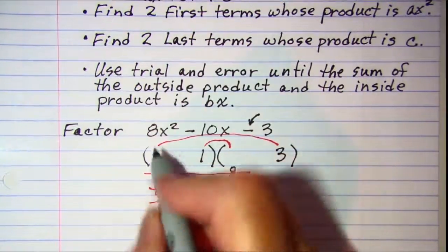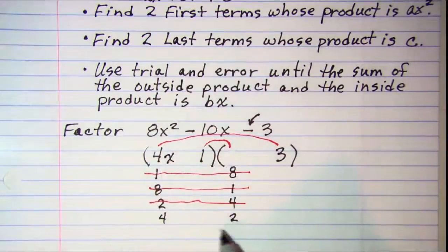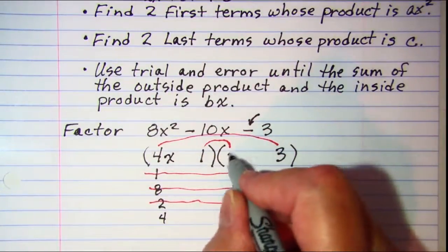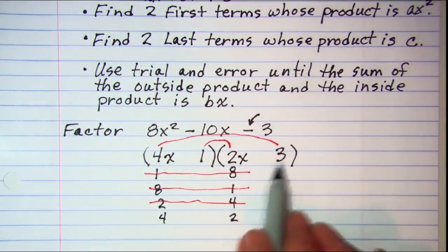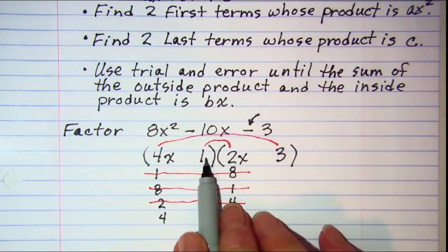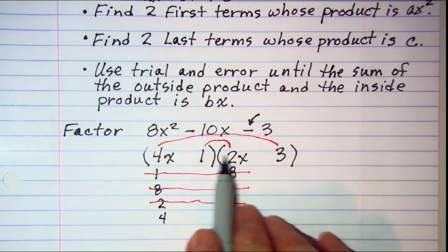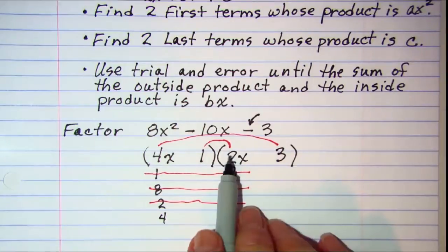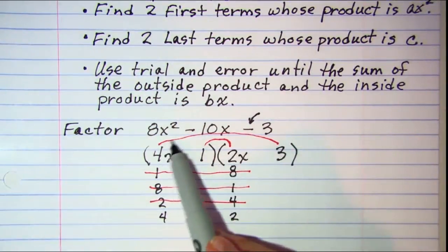My 4 I'm going to write here as 4x. My 2 I'm going to write here as 2x. Now I have 12x as my outer product, 2x as my inner product. The difference there is 10. Now when I add my inner and outer, I want the sum to be a negative number.